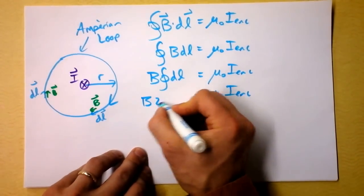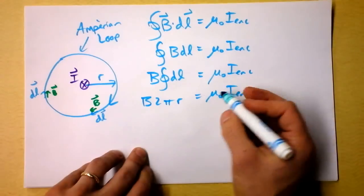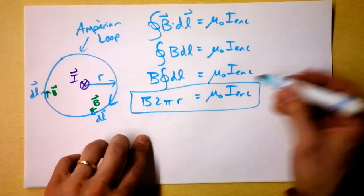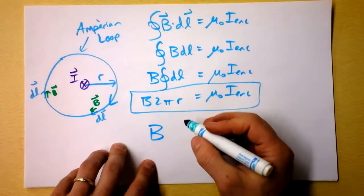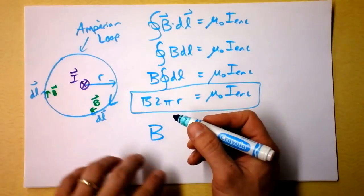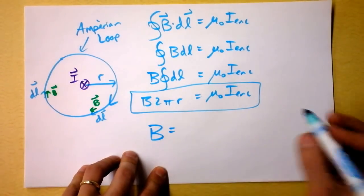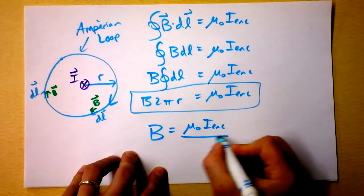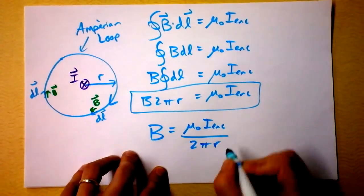It is 2 times pi times R. My plan is now to take this little bit of work that we've done and solve it for the magnetic field as a function of how far you are away from a current carrying wire. It is mu naught times I enclosed, divided by 2 pi R.